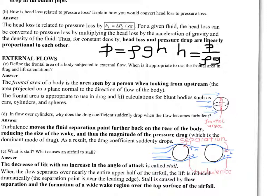The decrease in lift with an increase in angle of attack is called stall. When the flow separates over nearly the upper half of the airfoil, the lift is reduced dramatically. The separation point is near the leading edge, and stall is caused by flow separation and the formation of a wide wake region over the top surface of the airfoil.